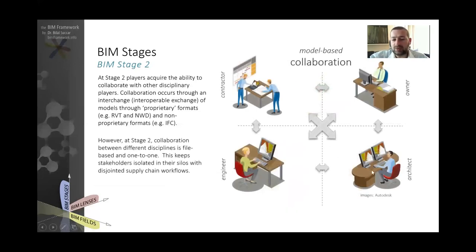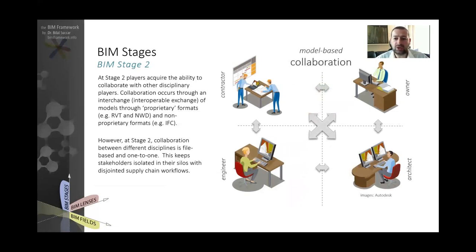It's really important to note that in model-based collaboration, the relationship between stakeholders is still linear. An architect exchanges models with the owner or structural engineer; the engineer exchanges with the architect and the contractor; the contractor with the subcontractor. The relationship between these parties is still a one-to-one relationship. There is no integrated supply chain based on the model. They are benefiting from collaborating using models and there are new and improved deliverables, but the relationship is still linear — not truly integrated.